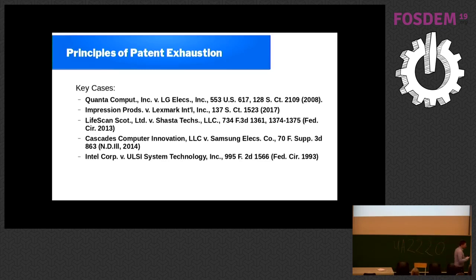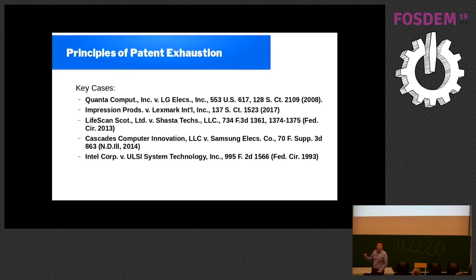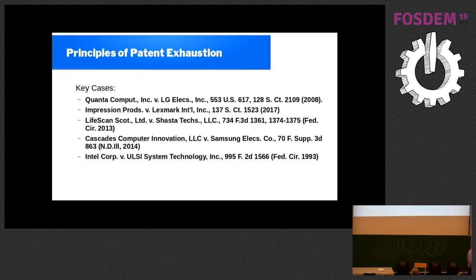Cascades Computer Innovation was the only case directly related to free software. Cascades had licensed Google for certain uses of their patents in the Dalvik virtual machine. Cascades then went and sued people who took the Android Open Source Project and built their operating systems with it. The court said: nope, exhaustion. And finally, Intel — this was about the ability to have MIG, and there is a trick on this one that I'll leave until later.